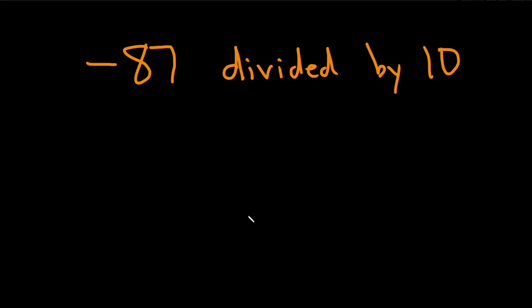Negative 87 divided by 10. In this question we have to use the division algorithm and find the quotient and the remainder.